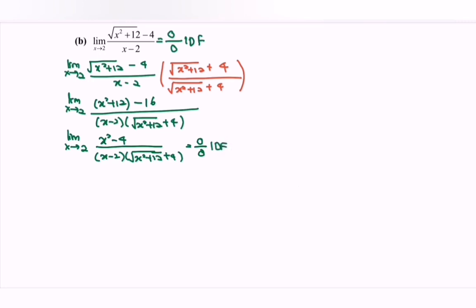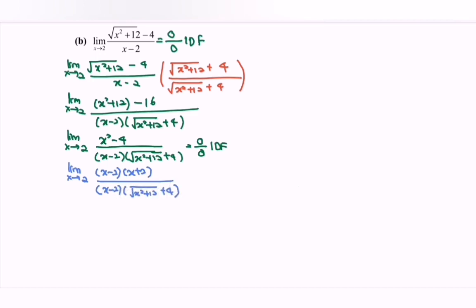So we repeat the process. This time, my suggestion is factorization. Limit as x approaches 2: we have x minus 2 times x plus 2, over x minus 2 multiplied with the square root of x squared plus 12 plus 4. Notice that we have common terms, so we simplify. Rewriting: limit as x approaches 2 of x plus 2, over square root of x squared plus 12 plus 4.